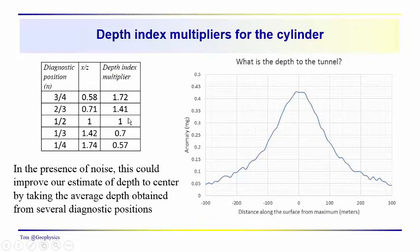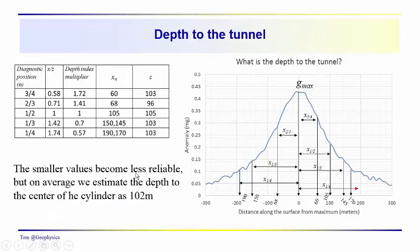So, let's take a look at a problem. We have an anomaly. We're pretty sure it's associated with a tunnel. Could be a subway tunnel, something pretty large. We've got an anomaly of about 4.25 mG. And we have some noise. So, we have noisy data. And we have these different diagnostic positions that we're working with. So, we'd probably want to use more than just one diagnostic position. We'd probably want to use multiple diagnostic positions and take an average, in order to get kind of the average depth.